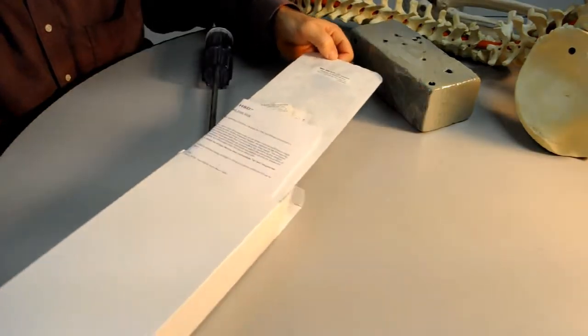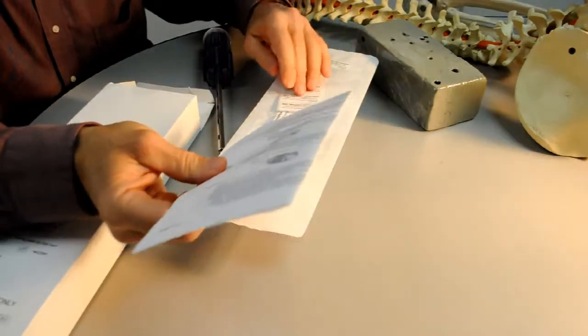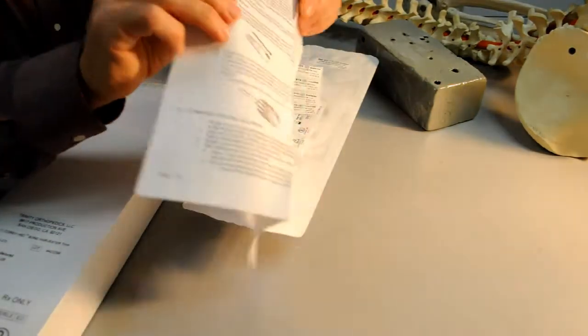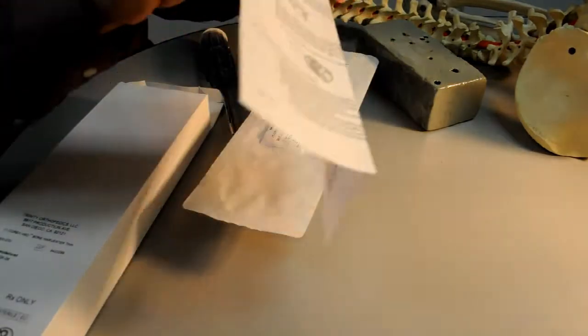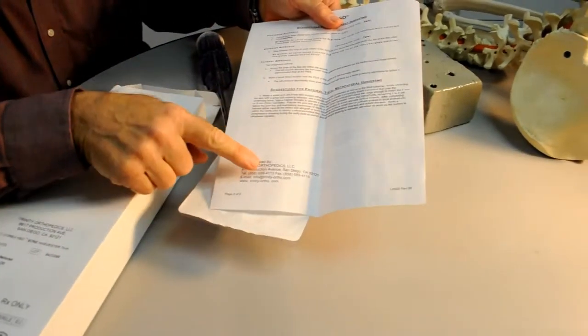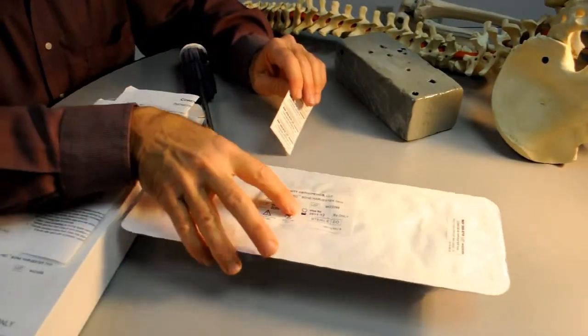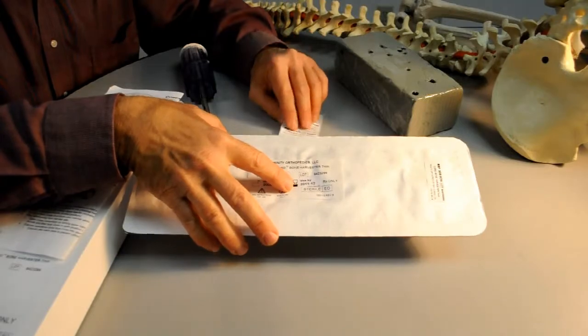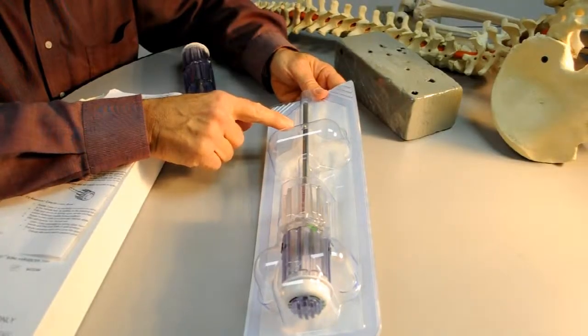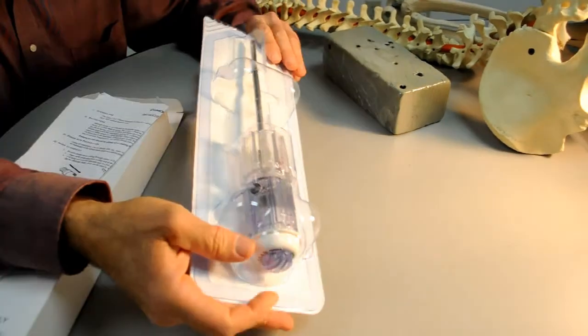When the box is opened, there will be detailed instructions for use which are reasonably thorough in describing the use of the device including recommended sites for autologous bone harvesting. The expiration date is also listed on the peel pack. The device comes in seven and nine millimeter diameters.